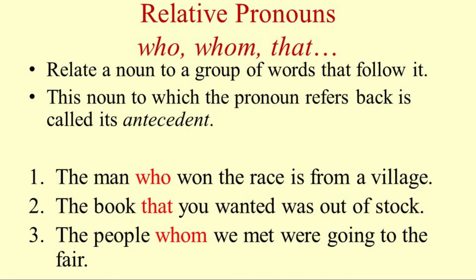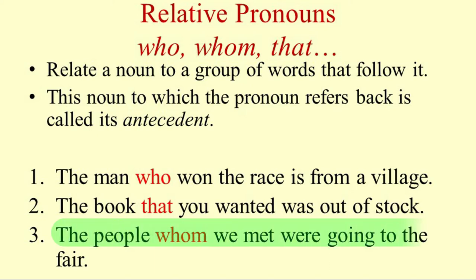Which man? The man who won the race. So here, who is a relative pronoun. The noun to which this relative pronoun relates is called its antecedent. For example, in the sentence the man who won the race is from a village, the word man is the antecedent of the relative pronoun who. Similarly, in the sentence the book that you wanted was out of stock, the pronoun that is a relative pronoun that relates the noun book to the words you wanted. In the third sentence, the people whom we met were going to the fair — the relative pronoun whom relates the noun people to the group of words we met.